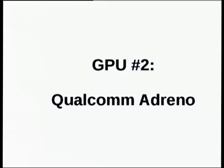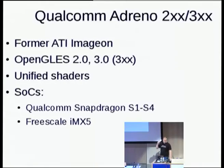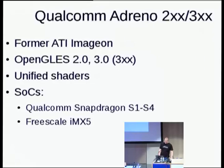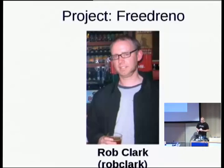The next project: Qualcomm Adreno — the chip in all the Windows phones and Snapdragons. It was the former ATI Imageon, sold for a measly $65 million in 2008 by AMD to Qualcomm. I think Qualcomm is now making more per month than that off of the Imageon — another really bad move by AMD, like the Geode a few years earlier when the Atom happened. The Imageon is now everywhere. It's also still available in the Freescale iMX5. The good thing about this chip is that it has unified shaders, so it simplifies the work a bit. Rob Clark works for Texas Instruments and will be joining Red Hat next week.